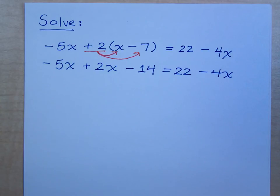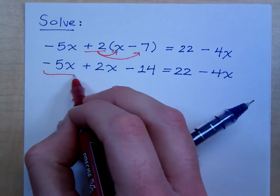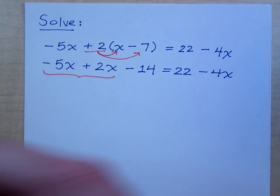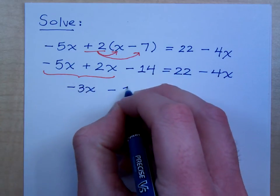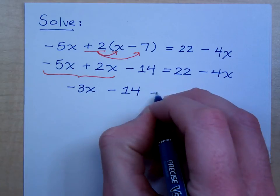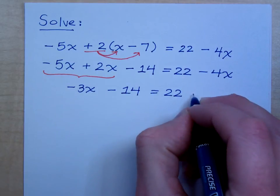Now, if you look here on the left side, you have some like terms to combine. So, when you combine these guys, what do you have? Negative 3x. When you combine these, you get negative 3x. And that's still minus 14, and on the other side, we have 22 minus 4x.